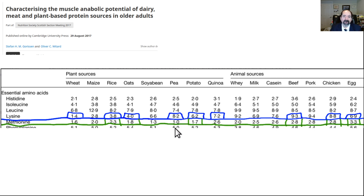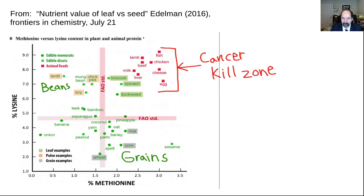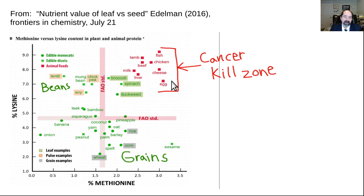A food like potato is relatively low in protein — about 8.5 to 9% — whereas soy is much higher in protein. Rice is super low, only about 5% protein. From the paper 'Nutrient Value of Leaf Versus Seed' by Edelman, 2016, there's a graph showing the amount of lysine and methionine as a percentage of calories across different foods. The worst of both worlds are animal foods — all the stuff in red — which I call the 'cancer kill zone': high in methionine and high in lysine. That seems to be the perfect blend to accelerate cancer growth, and that's where all your animal foods are.